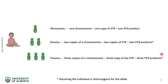There are asterisks next to the number of PCR products produced to note that if an individual is homozygous for an STR, only one PCR product is produced for that target. Endpoint PCR and gel electrophoresis cannot differentiate between monosomy and monoallelic disomy.